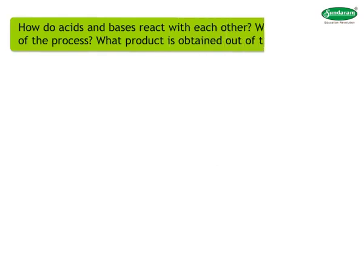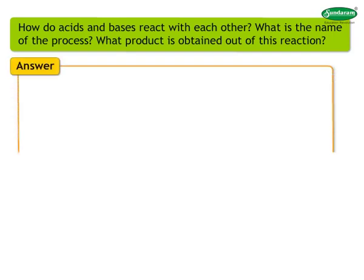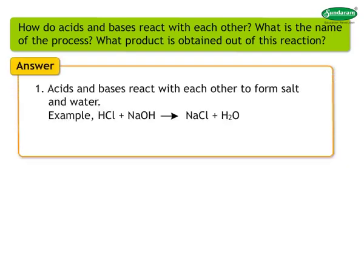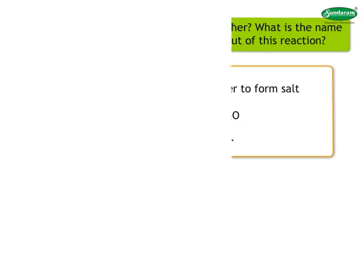How do acids and bases react with each other? What is the name of the process? What product is obtained? Answer: Acids and bases react with each other to form salt and water. Example: HCl + NaOH → NaCl + H₂O. This reaction is called neutralization.